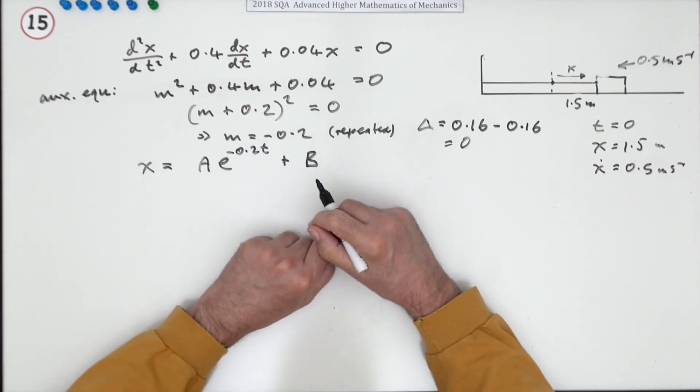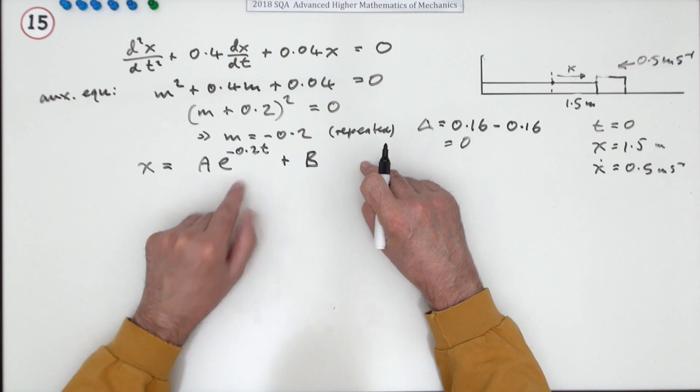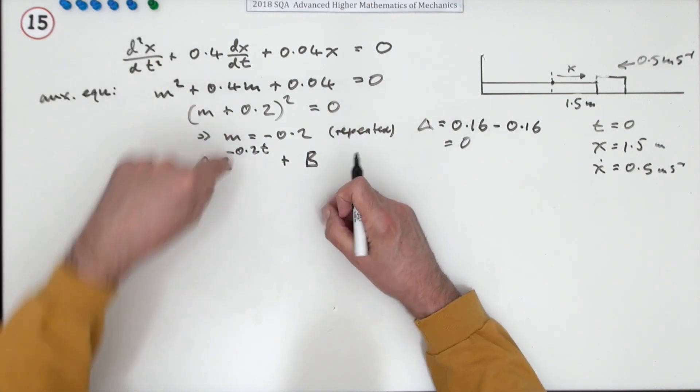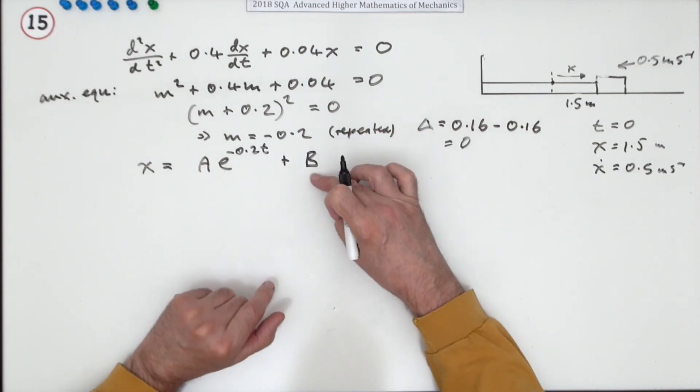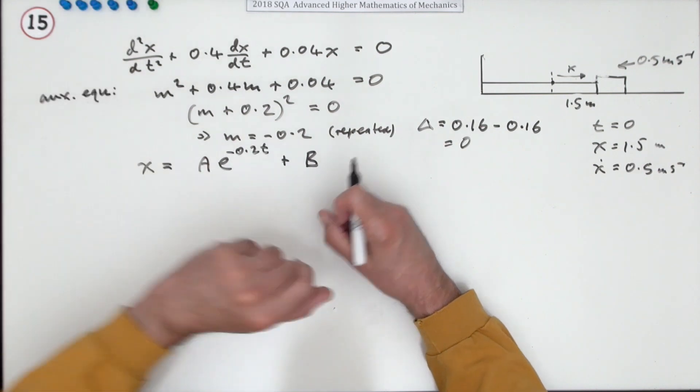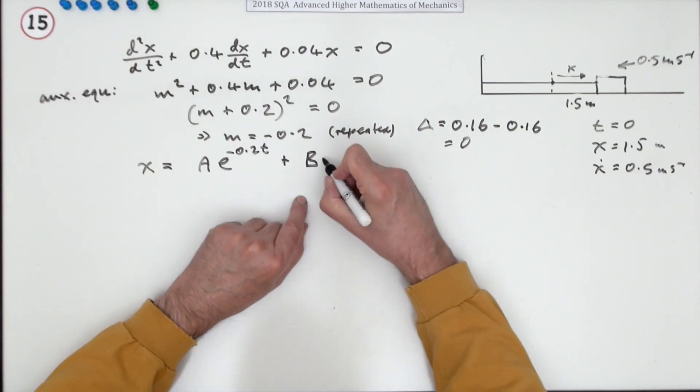Now since it's repeated, I'll have some A lots of e to the negative 0.2t, plus B lots of... now I can't have the same thing again, because then that'll only be one solution. There'd only be one constant and you have to have two coming out of a second order differential equation.